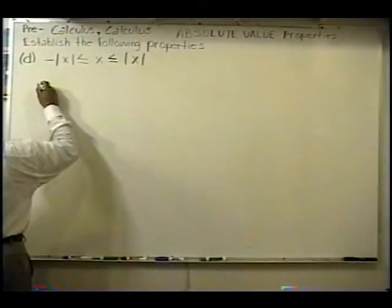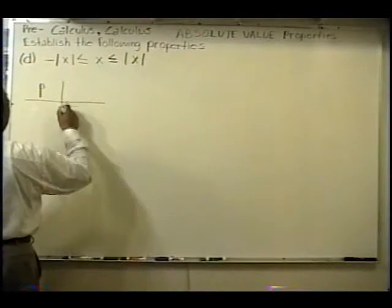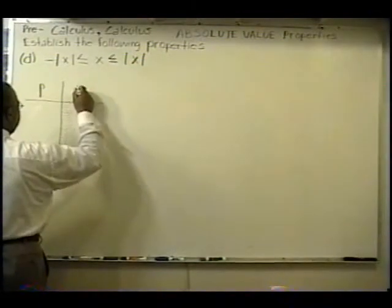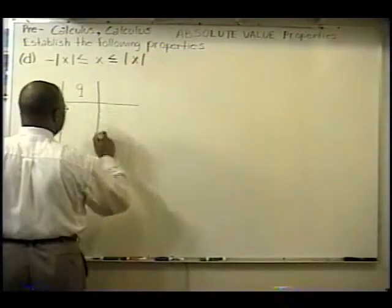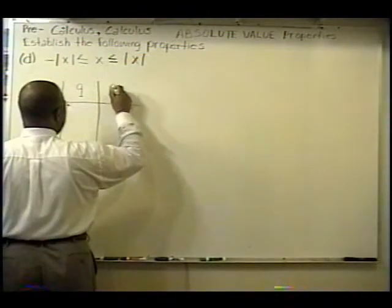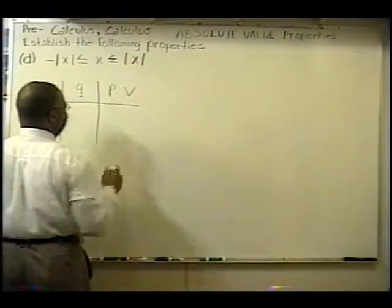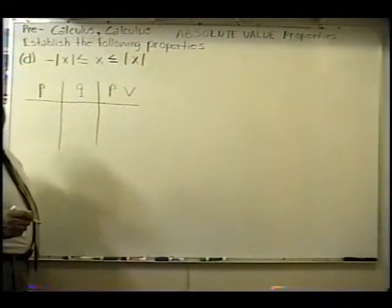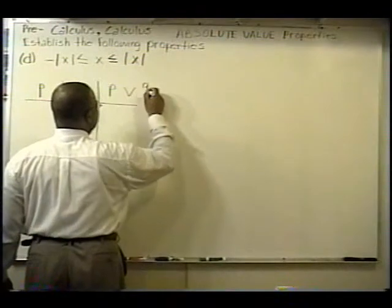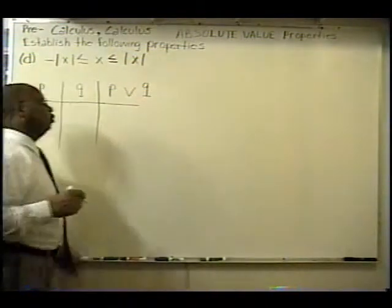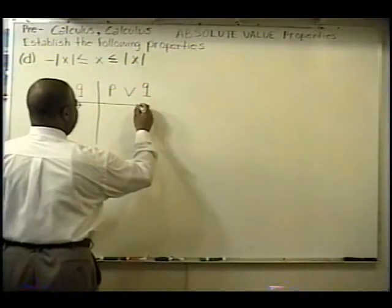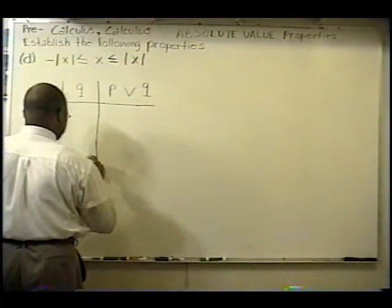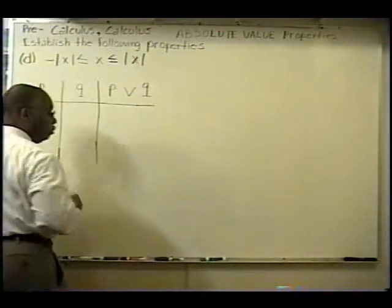Let's say that we have two statements: P and Q. I have P, and this symbol — this V — is another symbol for OR. So P or Q. That's another way of writing OR, and these represent statements. Understanding the logic of this truth table is vitally important.